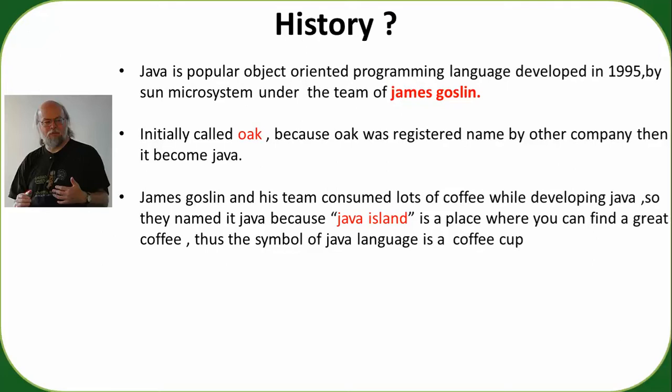James Gosling kept the name Java — the whole team kept the name Java — because when it was developed, their whole team consumed a lot of coffee. Java island is the biggest producer of fine, high-grade coffee. That's why they named their programming language Java.